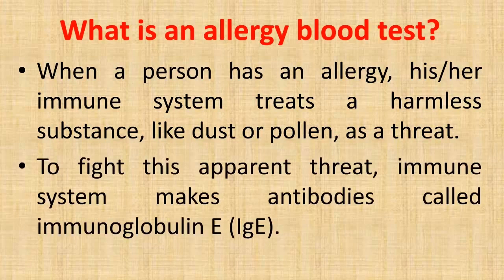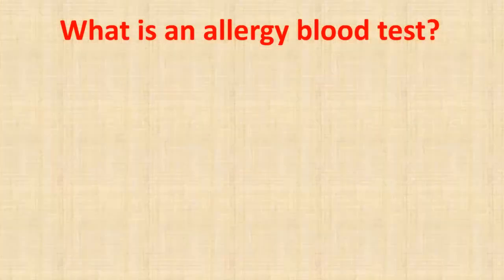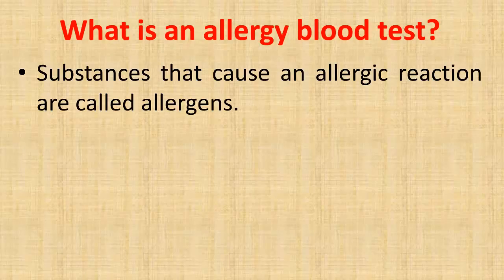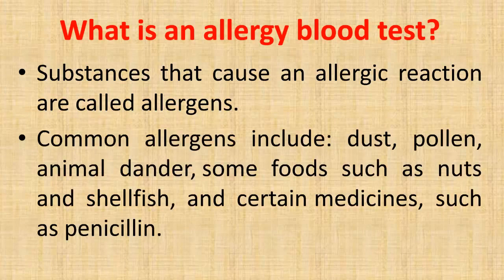To fight this apparent threat, the immune system makes antibodies called immunoglobulin E (IgE). Substances that cause an allergic reaction are called allergens. Common allergens include dust, pollen, animal dander, some foods such as nuts and shellfish, and certain medicines such as penicillin.